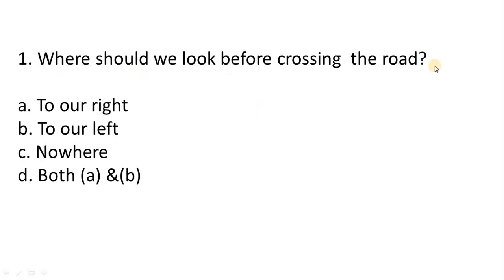Where do we look before crossing the road? A. To our right. B. To our left. C. Nowhere. D. Both A and B. Correct answer is option D. Both A and B.